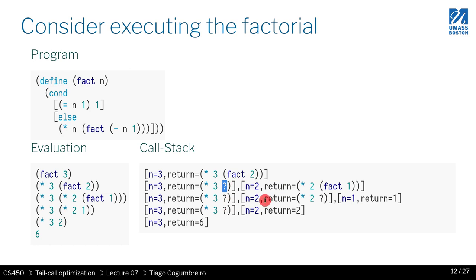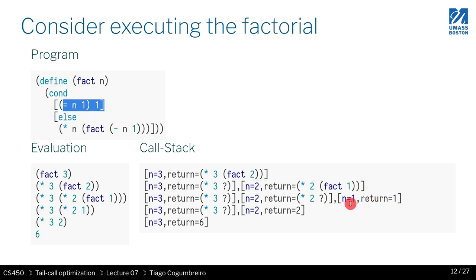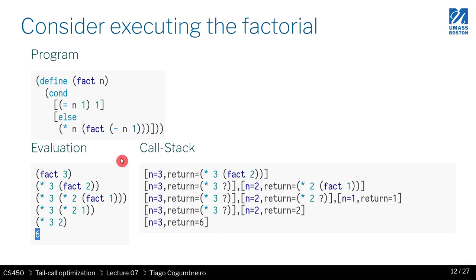The question mark means we're holding for a value to be filled in by whatever is returned by that activation frame. When we perform the recursive call again we compute factorial of one, and in the base case we return one. Then we start popping: the return fills in the question mark, then the next question mark, and finally we get six — the result of factorial of three.